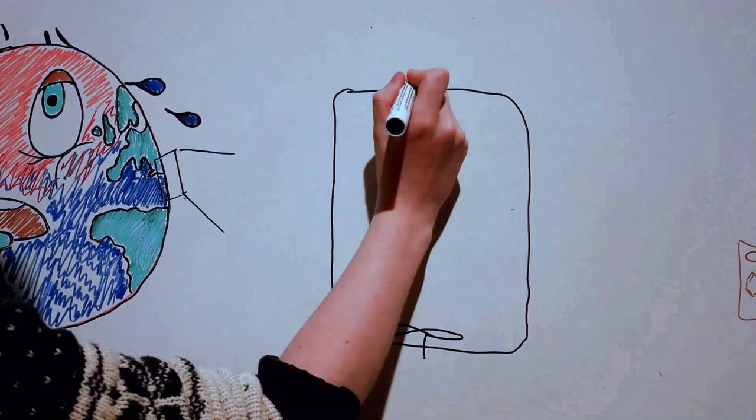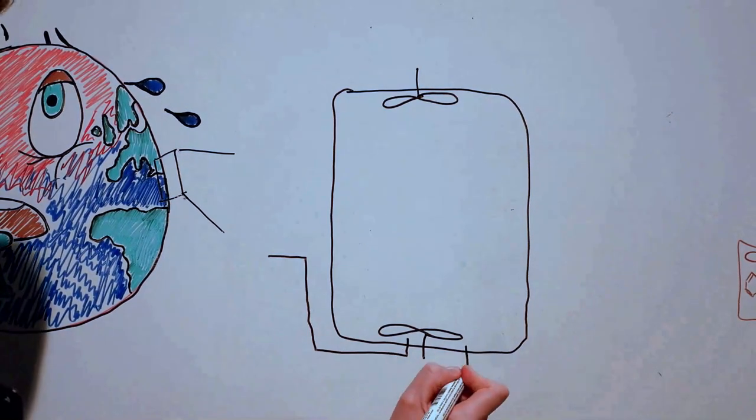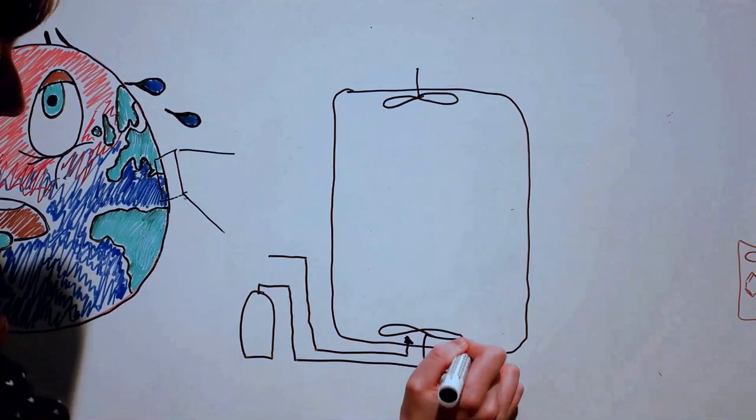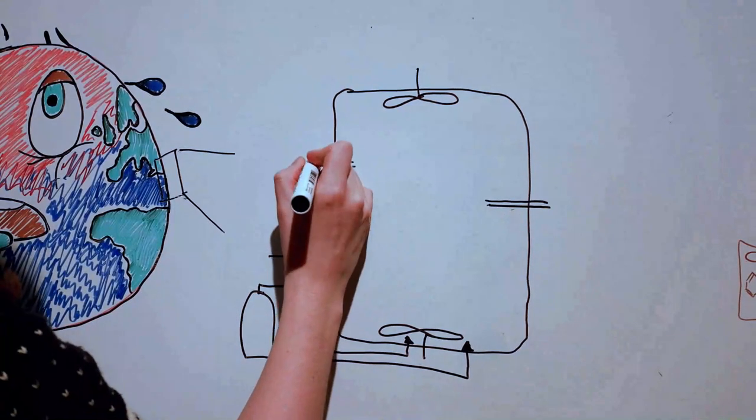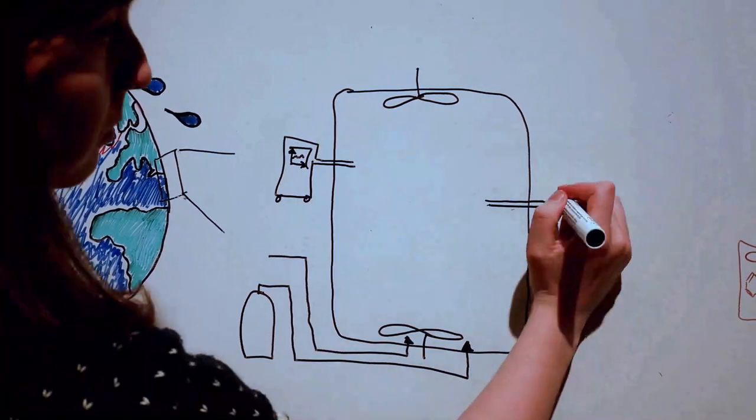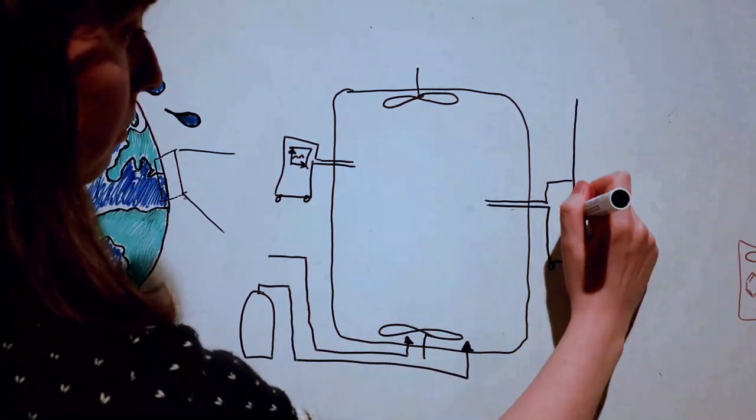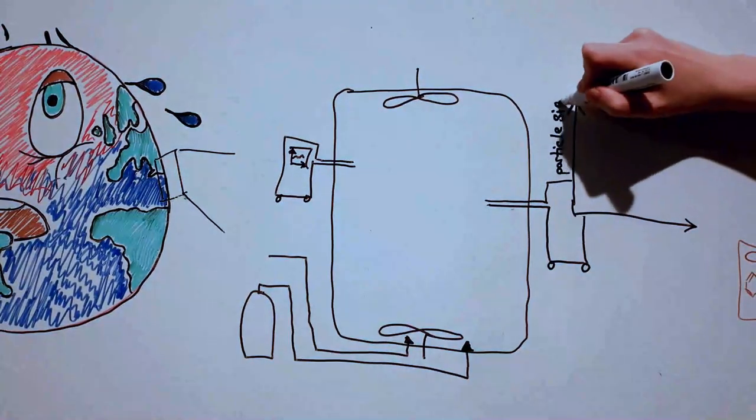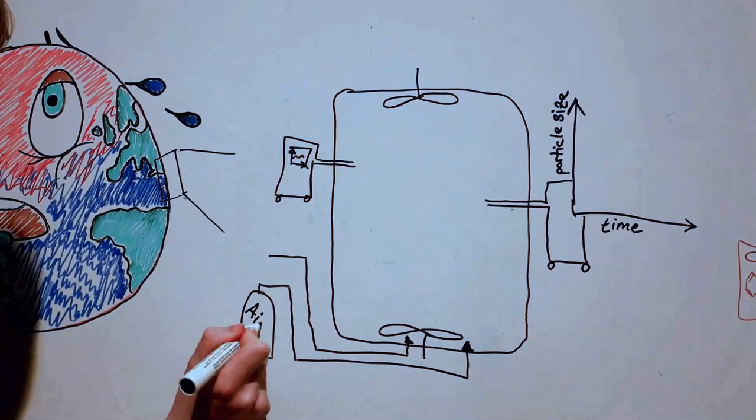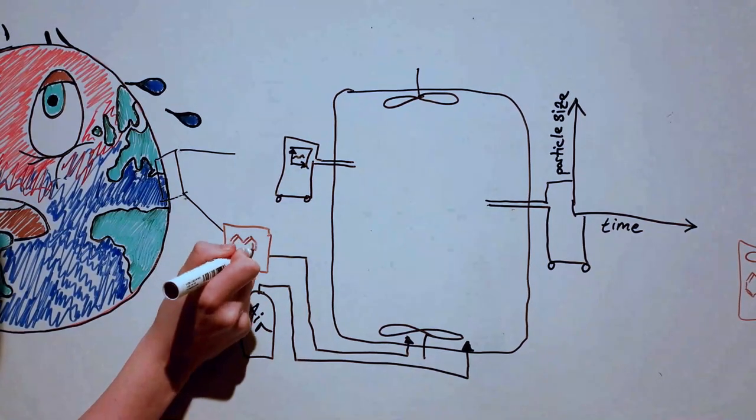The cloud chamber is filled with synthetic ultra-pure humid air, containing minute amounts of selected gases found in the atmosphere. During an experiment, many different instruments sample the air in the chamber, so we can analyze the chemical composition, aerosol particle number, size, and many other parameters.